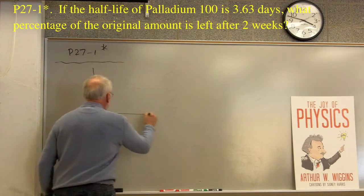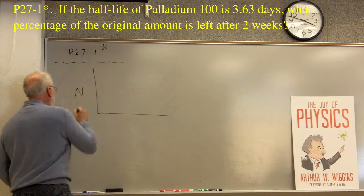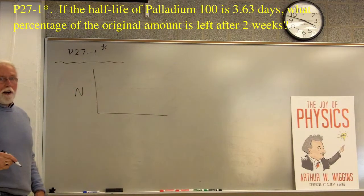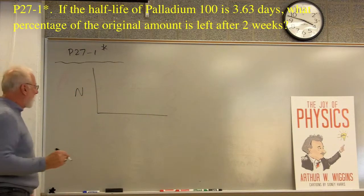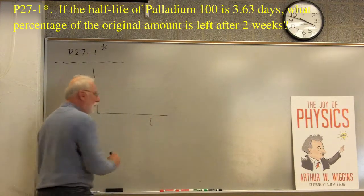Let's draw a graph. The graph says, what's the number of these undecayed nuclei left after a particular length of time? So, it's number as a function of time.